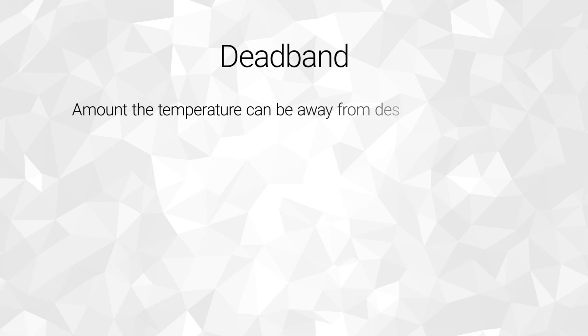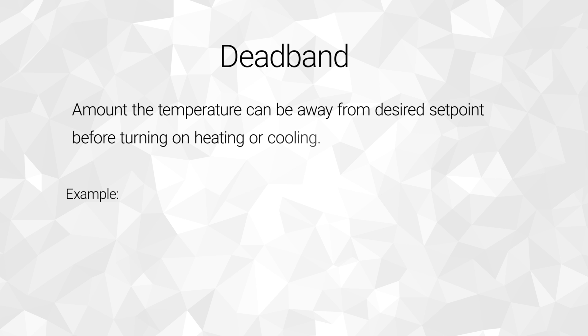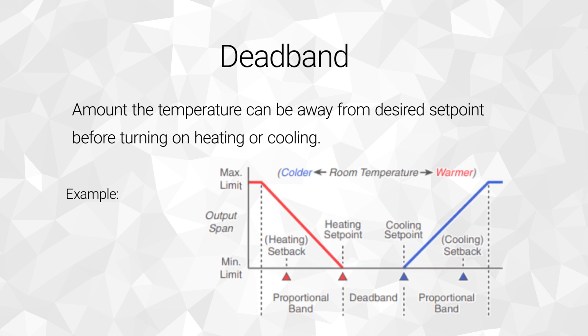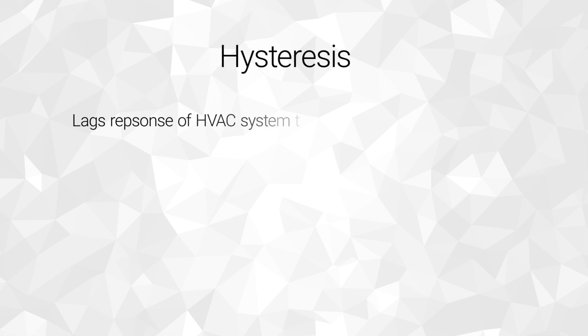Dead band is the amount the room temperature can move away from the desired set point before turning your heating or cooling system on. For example, if we set a thermostat to 74 degrees in the winter and it has been configured for a dead band of 4 degrees, heating will not be triggered until the room reaches 70 degrees. This ensures that the system is not constantly turning on or switching between heating and cooling with every minor deviation from the set point.